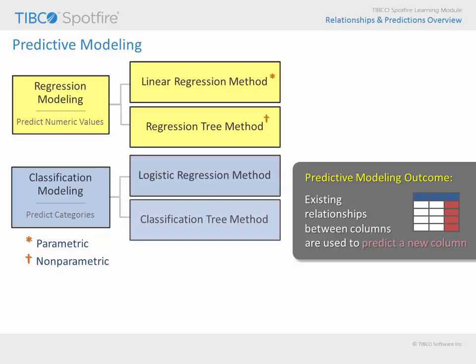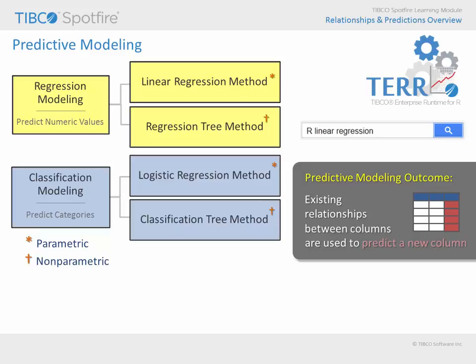Likewise, classification modeling will provide two models from which to choose. The logistic regression method is a parametric method which is used when the response column is categorical with only two possible values. The probability of the possible outcomes is modeled with a logistic transformation as a weighted sum of the predictor columns. The classification tree method, on the other hand, can handle response variables with more than two classes. This non-parametric method creates a binary tree by recursively splitting the data on the predictor values. All of these models are executed using the TIBCO Enterprise Runtime for R, or TEAR statistical engine, which is based upon the R statistical language. Although you can use these tools without knowing anything about TEAR or R, understanding that these methods are based upon R statistics may be helpful as you seek to obtain more details about each of these algorithms. For example, you might type R linear regression, rather than just linear regression, if you wanted to perform an internet search to learn more about the underlying statistics supporting that method.